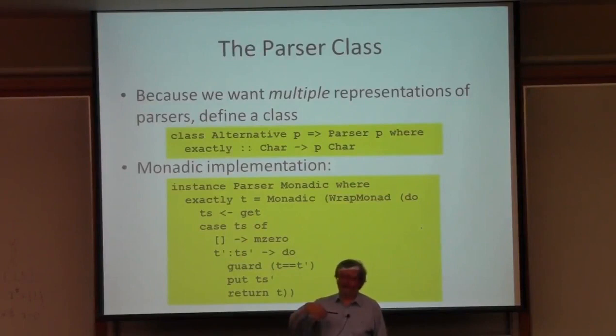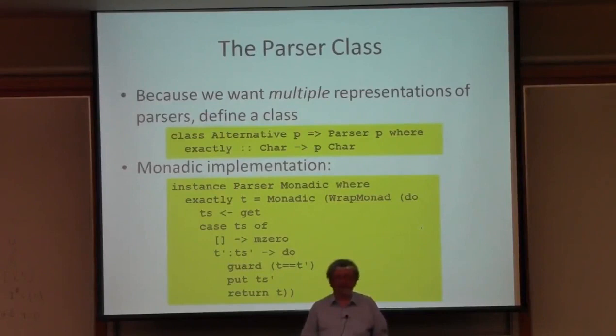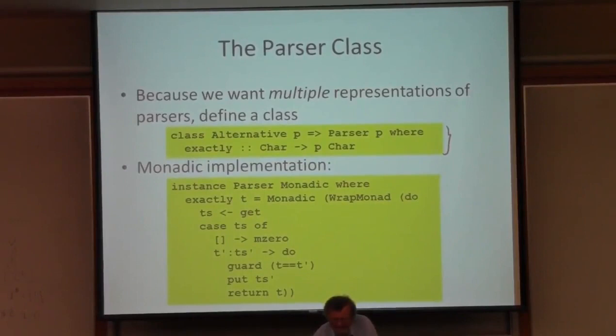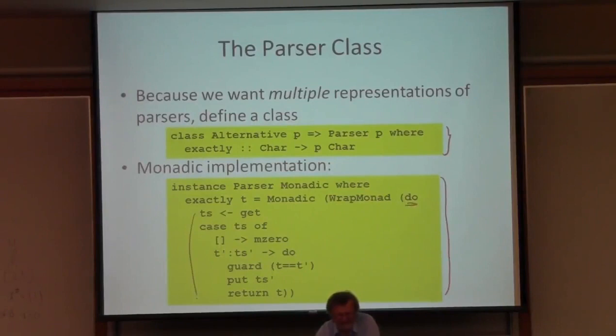I'm going to implement that in a moment, but just before I do, we already talked about many different representations of parsers. I'm going to define many representations, so that means I should have a class of parser representations. I'm going to define my exactly operation as the only operation in this class. Here is the implementation for monadic parsers. All I do is wrap the monadic computation, which does just what you would expect.